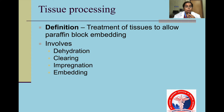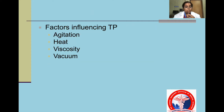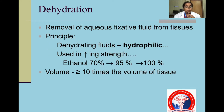Factors that influence tissue processing include agitation, heat, viscosity and vacuum. Dehydration is the removal of the aqueous fixative fluid from tissue. The principle is that dehydrating fluids are hydrophilic, so they are used in increasing strength. When tissue is exposed to ethanol, it is exposed to an increasing gradient: 70 percent, then 95 percent, then 100 percent.